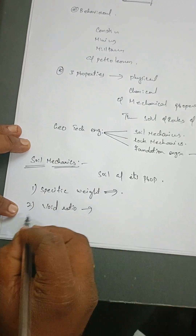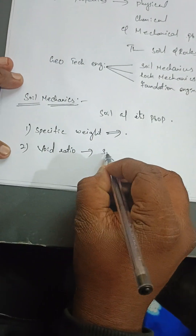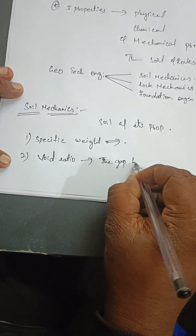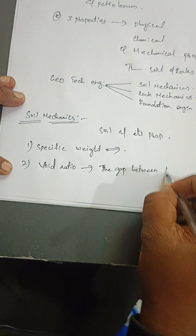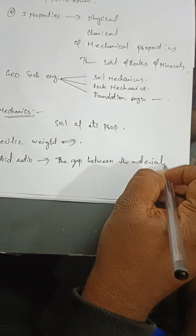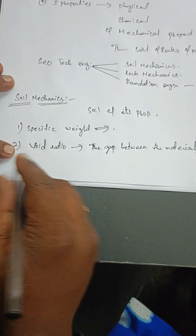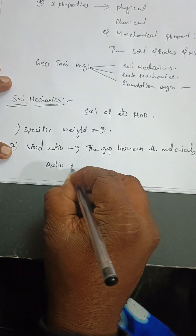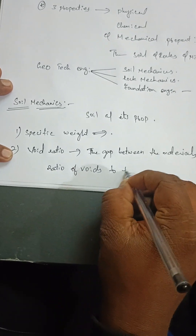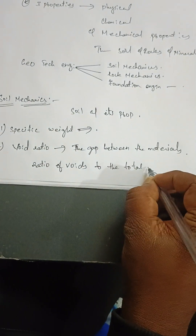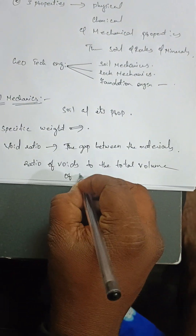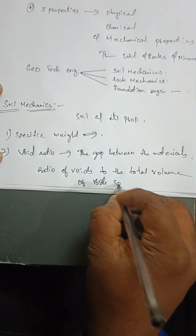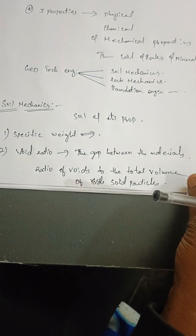Void ratio: first, you need to know what a void is. A void means the gap between soil particles — what you might call porosity. The gap between the materials is called a void. Void ratio in soil mechanics is the ratio of the volume of voids to the total volume of solid particles. This is called void ratio.